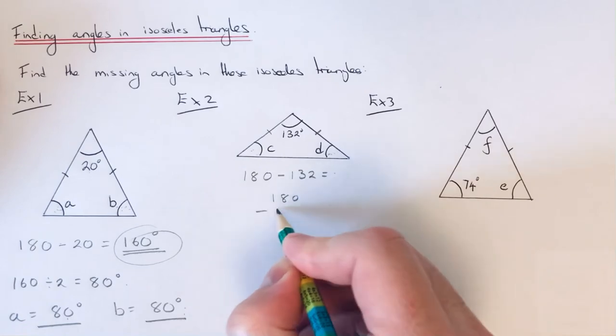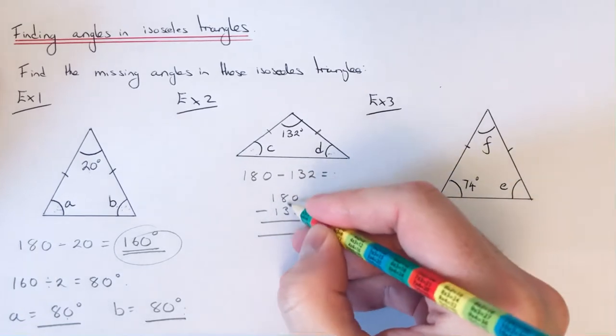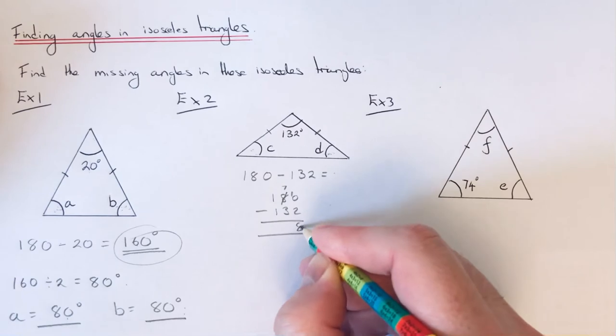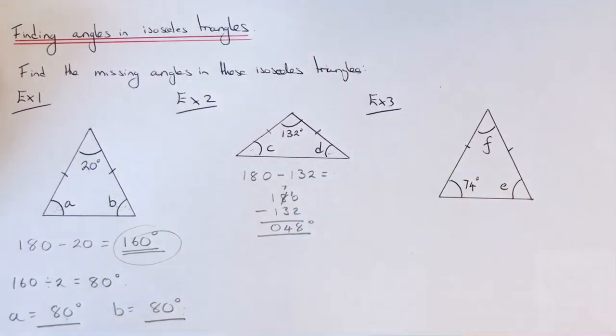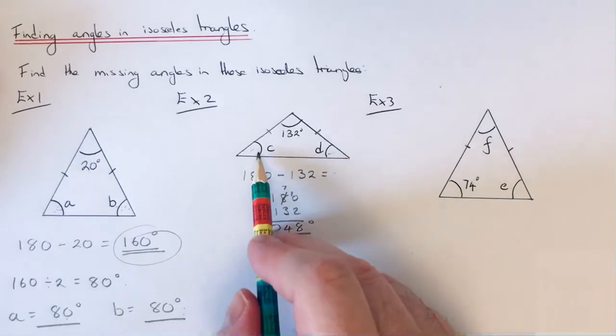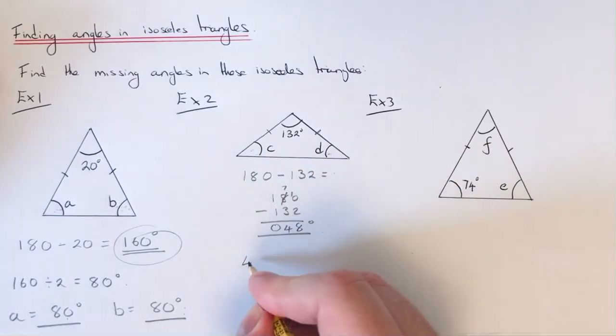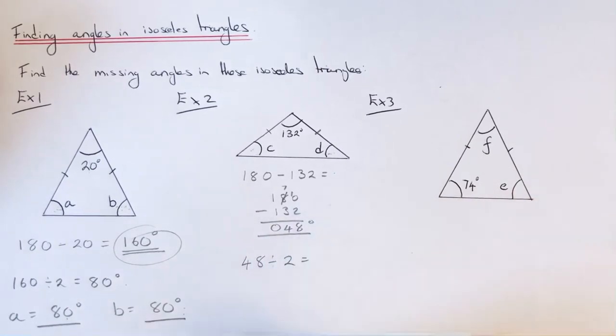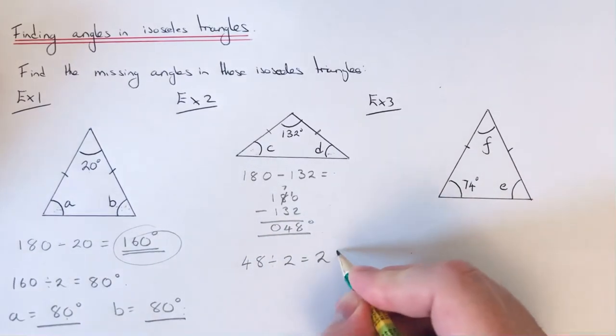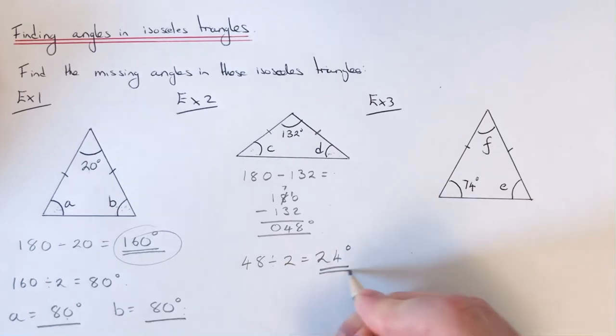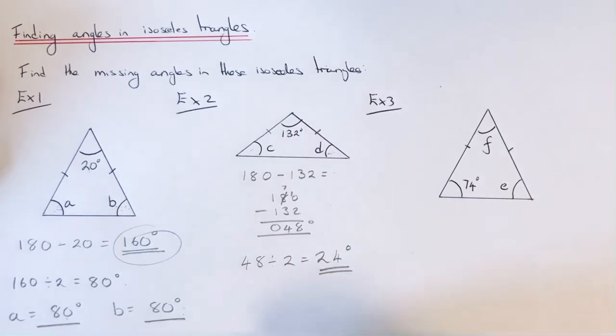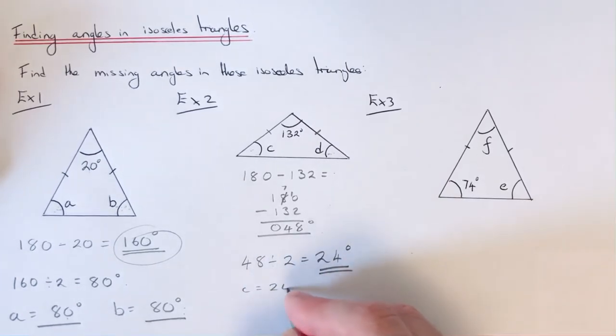We'll do this one in columns this time. That gives us 48 degrees. Again, these two angles at the bottom are both the same, so we need to half this answer or divide it by 2. That gives us an answer of 24 degrees. So angle C is 24 and so is angle D.